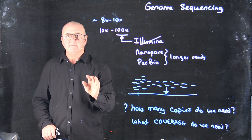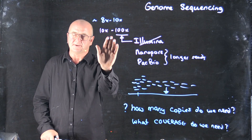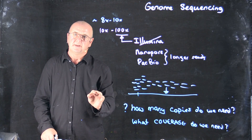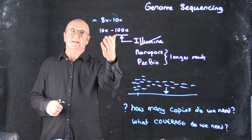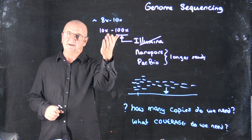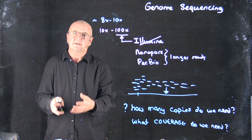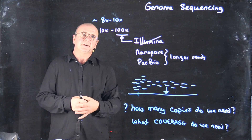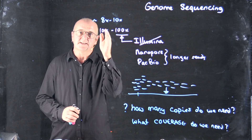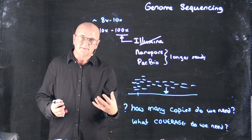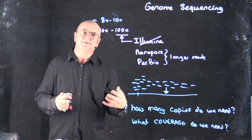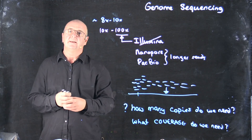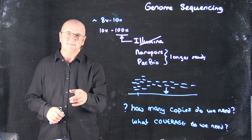Remember, the amount of sequencing we have to do is dependent on the size of the genome. If we have a longer genome, to get the same amount of coverage we need to do more sequencing than for a shorter genome. The idea about coverage is that it's independent of genome size, but it allows you, given a particular genome size, to estimate how much sequencing you would have to do.